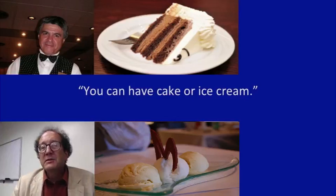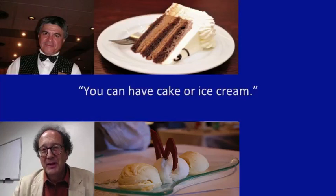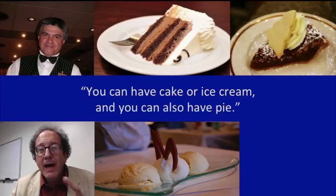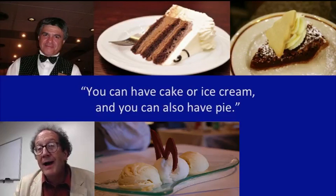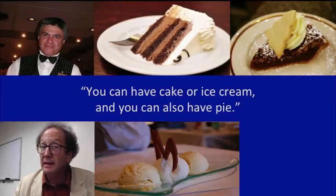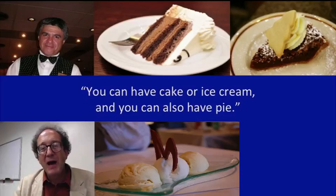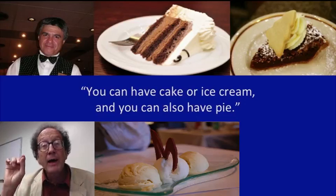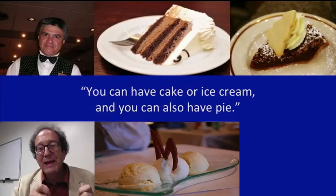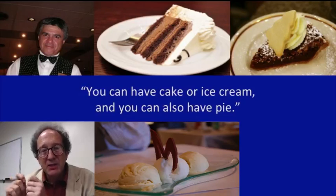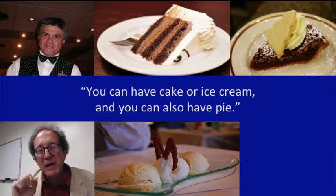One important feature of conversational implication is that you can cancel conversational implications. The waiter can say, 'You can have cake or ice cream. Oh yeah, and you can also have pie.' When he added that, he did not take back that you can have cake or ice cream — you can still have that. It's just that you can also have pie. So he canceled the conversational implication that you cannot have pie. With a conversational implication, if a certain sentence P conversationally implies another sentence Q, then you can deny Q and P still might be true.